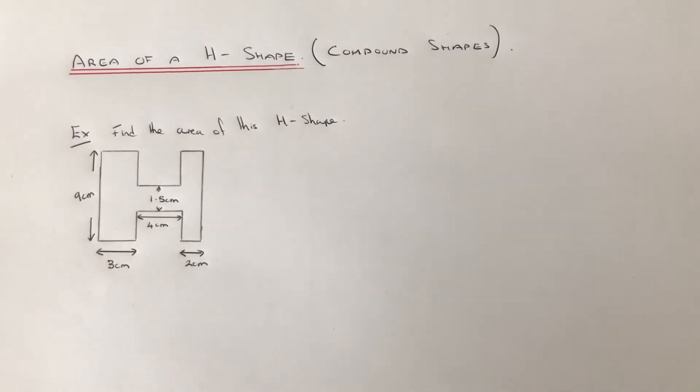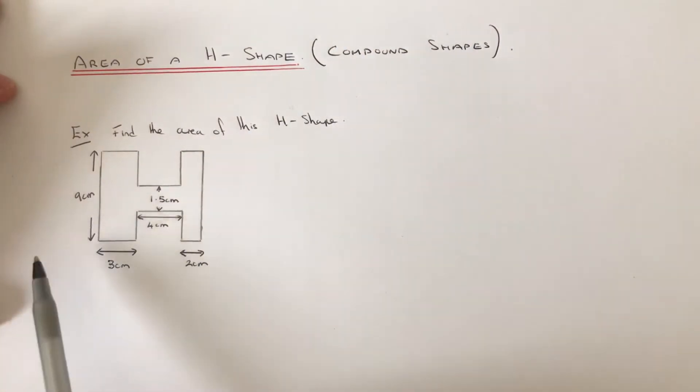Hi guys, welcome back. This is Maths 3000. Today we'll show you how to work out the area of an H-shape, which is basically a compound shape made up of three rectangles. So let's have a look at an example. We've got to find the area of this H-shape.